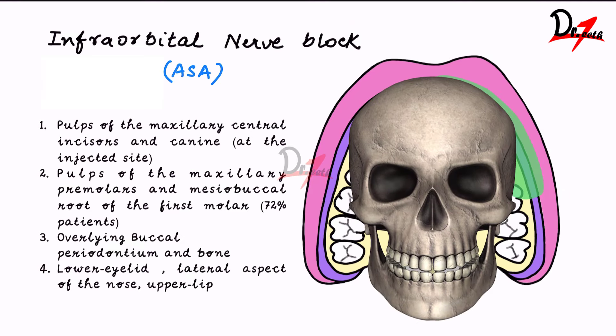For example, if we inject on this side, then the lower eyelid, the lateral aspect of the nose, and also the upper lip will be anesthetized.